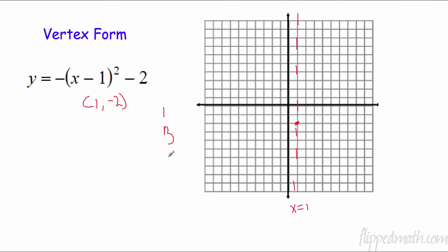Remember it's one over then it's three, five — so one over one down one, one over three down three, one over five down five. Now I can reflect this point, and then reflect it here. Remember to make these as curved as possible because it's a parabola — it's a quadratic graph, not an absolute value graph.